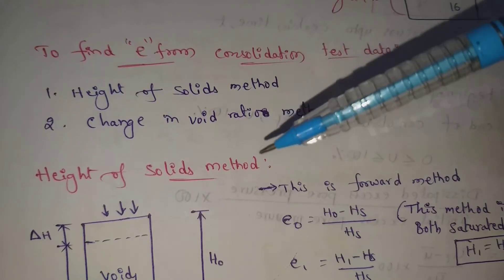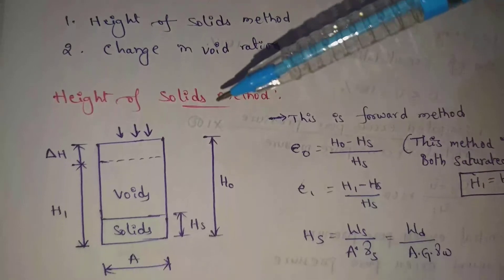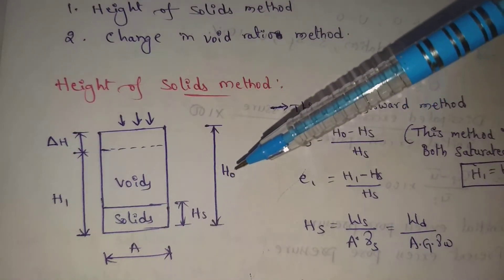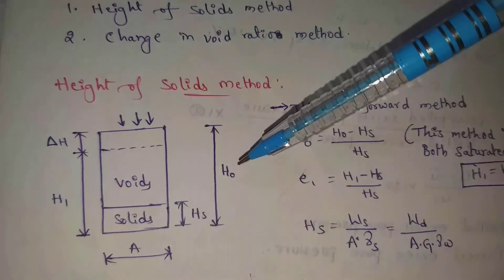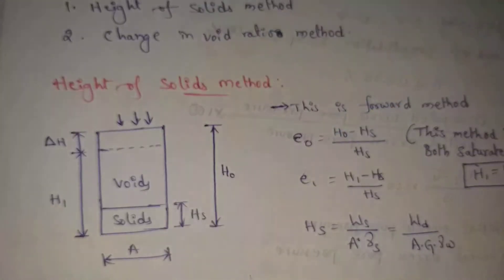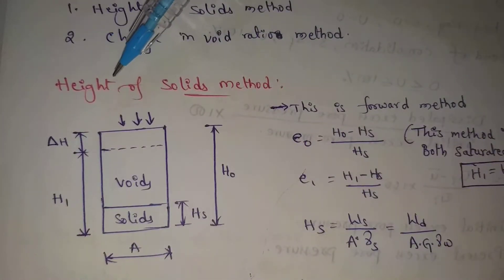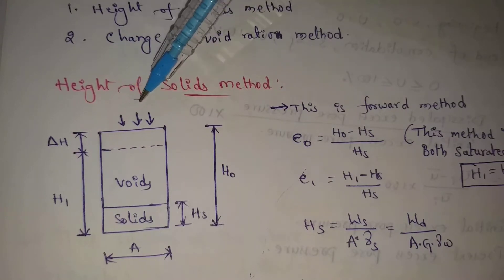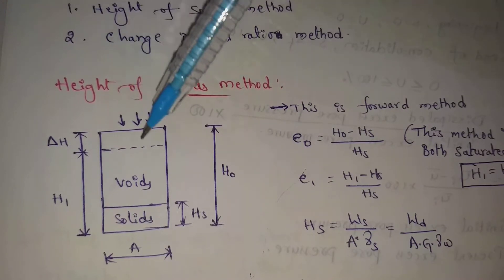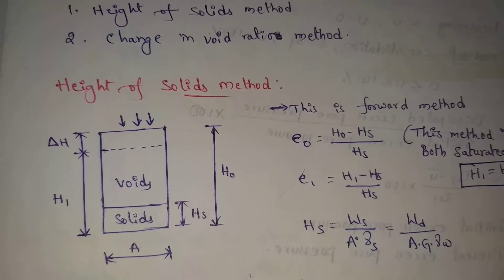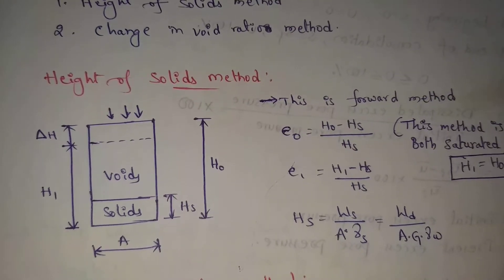First one: height of solids method. We use a unit phase diagram. Solids have height hs, and the total height is h0. There are voids as well. When a load is applied, some change in height occurs. The area is common — it remains the same, there is no change in area. This is the forward method.